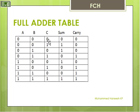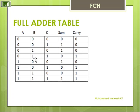0, 0, 0 equal to 0, there is no Carry. 0, 0, 1: Sum is equal to 1, Carry is equal to 0. 0, 1, 0: Sum is equal to 1, Carry is equal to 0. 0, 1, 1: Sum is equal to 0, then we have a Carry of 1.